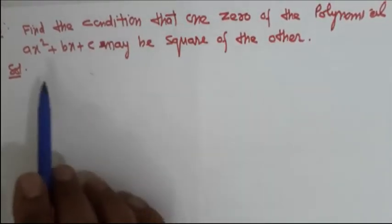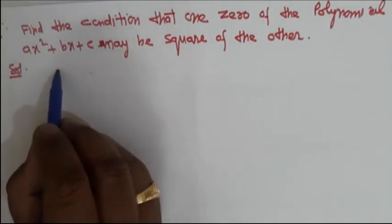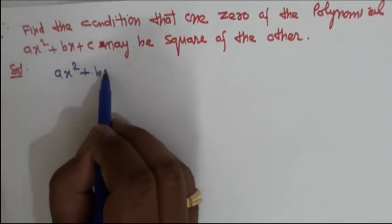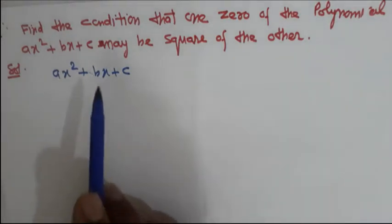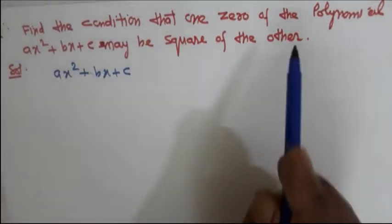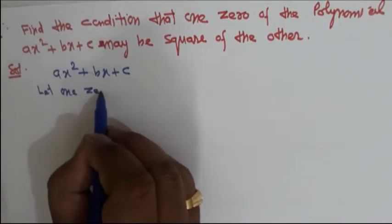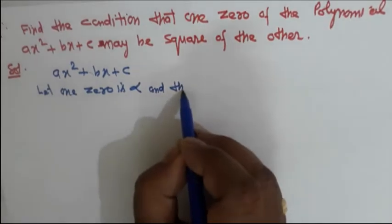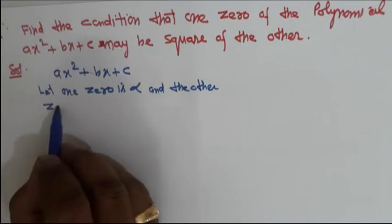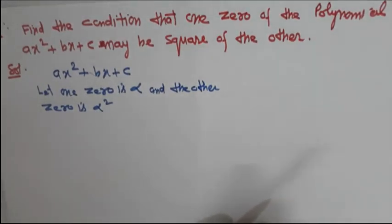Find the condition that one zero of the polynomial ax² + bx + c may be square of the other. The given polynomial is ax² + bx + c. We have the formula: sum of zeros = -b/a, and product of zeros = c/a. Here one zero is the square of the other, so let one zero be alpha and the other be alpha square.